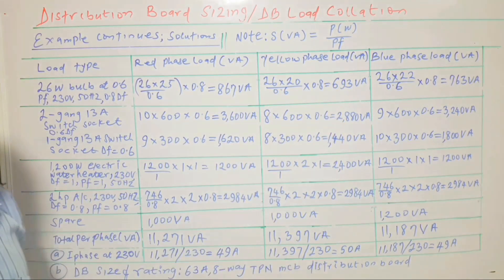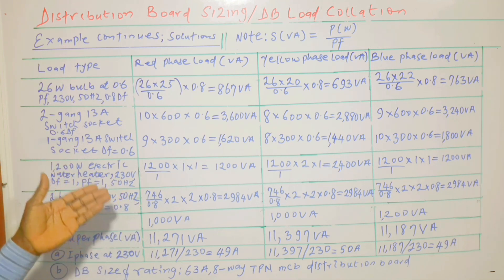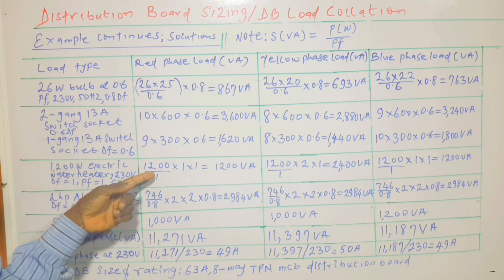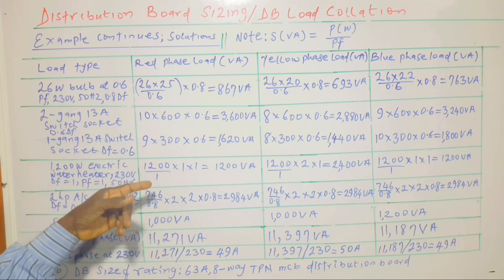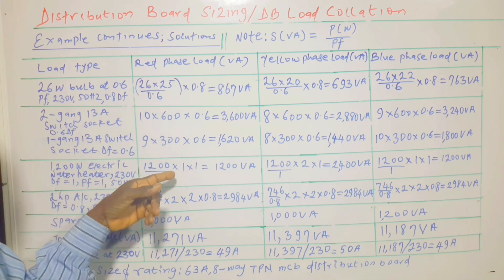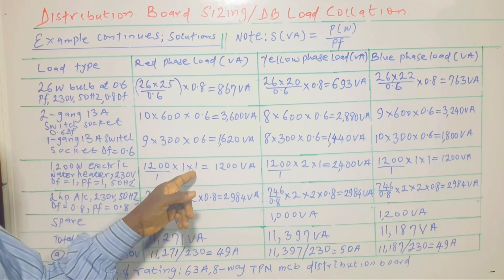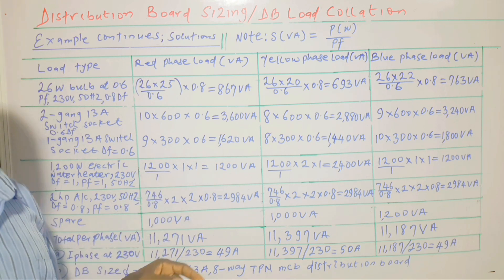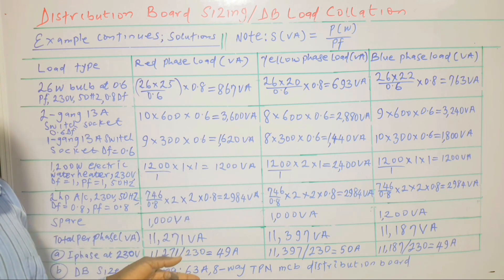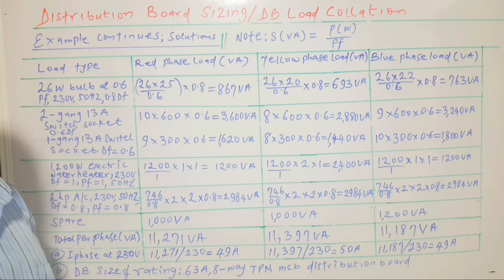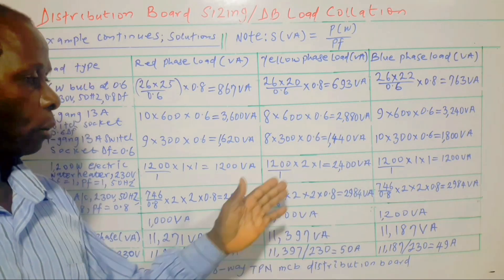Now we come to the electric water heater, which is a heating load. The power factor is 1, that's why the water heater power is being divided by 1. Then we multiply by 1 because only one is connected to the red phase, and the diversity factor is 1 since there are not many of them. We don't apply diversity factor when we don't have many of the items. Similar calculations hold for other phases.